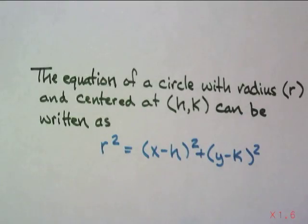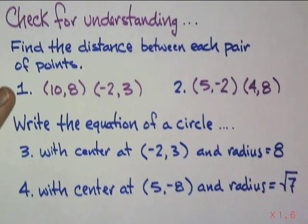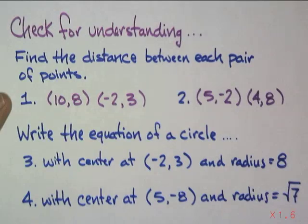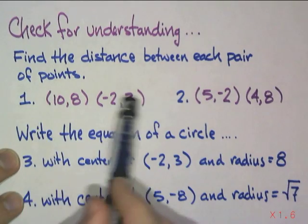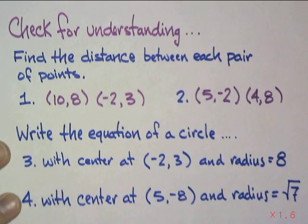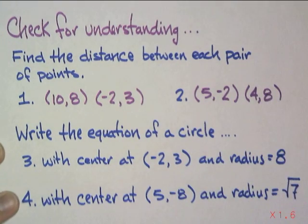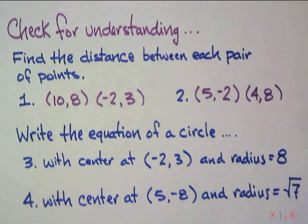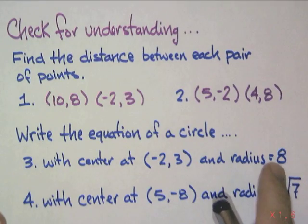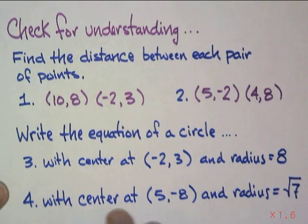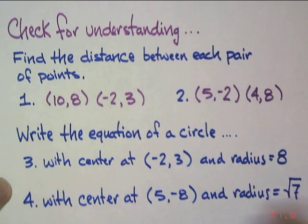Here we go with the problems for today. Here we go. Find the distance between each pair of points. So, there's your x and y, x and y. Find the distance between those points. And number two, two different points. Write the equation for the circle that's centered at (-2,3) and has a radius of 8. That's a problem. And, separately, a centered at (5,-8) with radius √7.